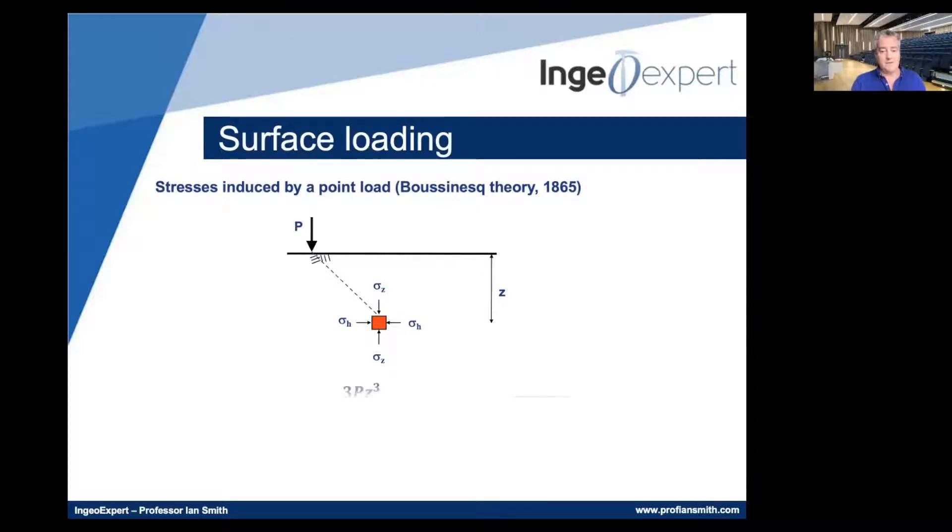Now, according to Boussinesq theory, we can calculate the magnitude of that stress increase in the Z direction by this expression here, sigma Z. Sigma Z is a stress increment. It's an increase in stress over and above the original value. And it is established as equal to three times the intensity of P, where P is a force in kilonewtons, times Z cubed divided by 2 pi times the quantity R squared plus Z squared to the power of 5/2.